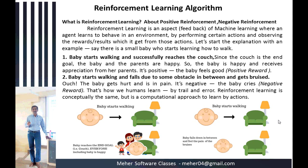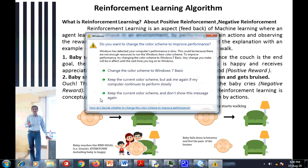For example, a real-time example: a baby starts walking and successfully reaches the couch. Since the couch is the end goal, the baby and the parents are happy — the baby receives appreciation from the parents, which is positive. This is called a positive reward. Another example: the baby starts walking but falls due to some obstacles and gets bruised — the baby gets hurt and feels pain. This is a negative reward.